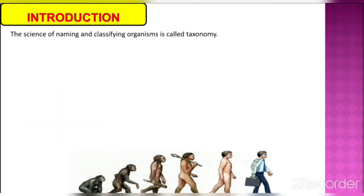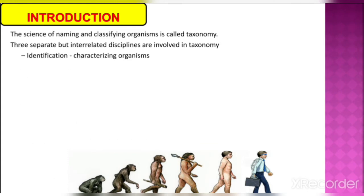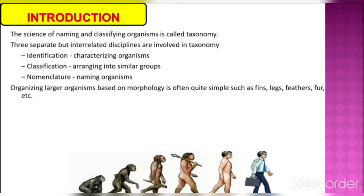The science of naming and classifying organisms is called taxonomy. Three separate but interrelated disciplines are involved in taxonomy: identification, that is characterizing organisms; classification, arranging into similar groups; and nomenclature, that is naming of organisms.